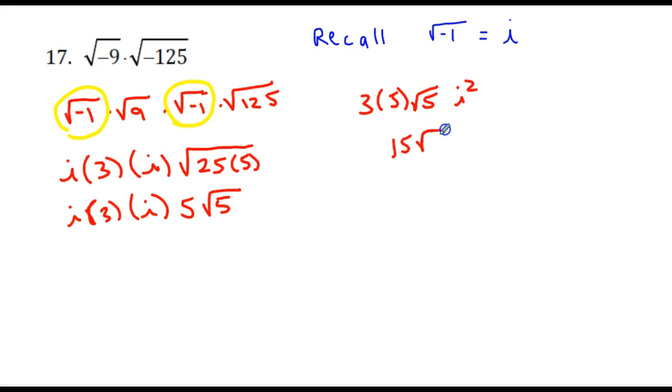So we have 15 times the square root of 5 times i squared. Now i squared, if you think about it, comes from taking this expression and squaring both sides. If I take the square root of negative 1 and square it,